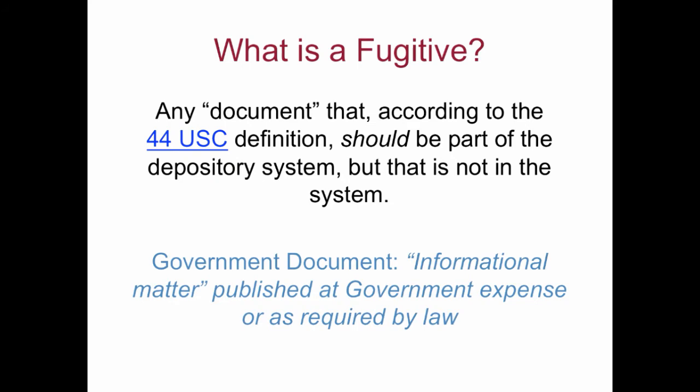What is a fugitive document? Today we're going to use the shorthand term 'document' to refer to any government information, whether it's a single PDF, an HTML page, a video, an audio file, a database, or anything else. A fugitive document is outside the system. Title 44 of the U.S. Code defines what documents go into the FDLP as informational matter published at government expense or as required by law. A fugitive is anything that fits that definition but does not get into the FDLP.